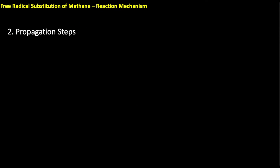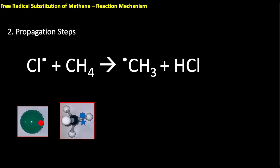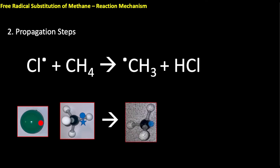Now we look at what we call propagation steps, which really drive the reaction. First, one of those chlorine free radicals — represented by a dot — meets a methane molecule. That chlorine atom takes away a hydrogen atom from the methane, forming a new chlorine-hydrogen bond in hydrogen chloride, and leaving behind a methyl radical. The carbon has just one of the electrons from the bond. So the chlorine free radical has been replaced by a methyl free radical — that is our first propagation step.